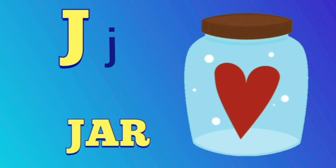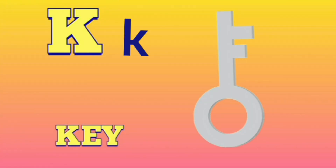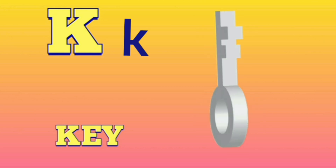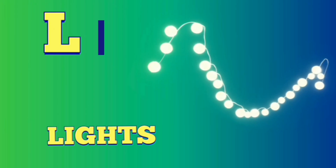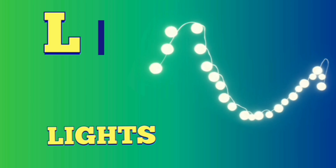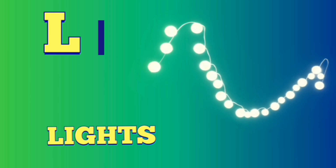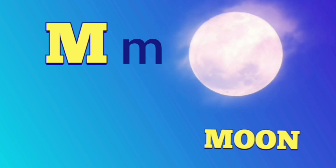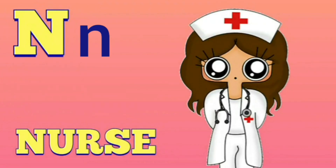K is for key. L is for lights - la la - lights. M is for moon - ma ma - moon. N is for nurse - na na - nurse.